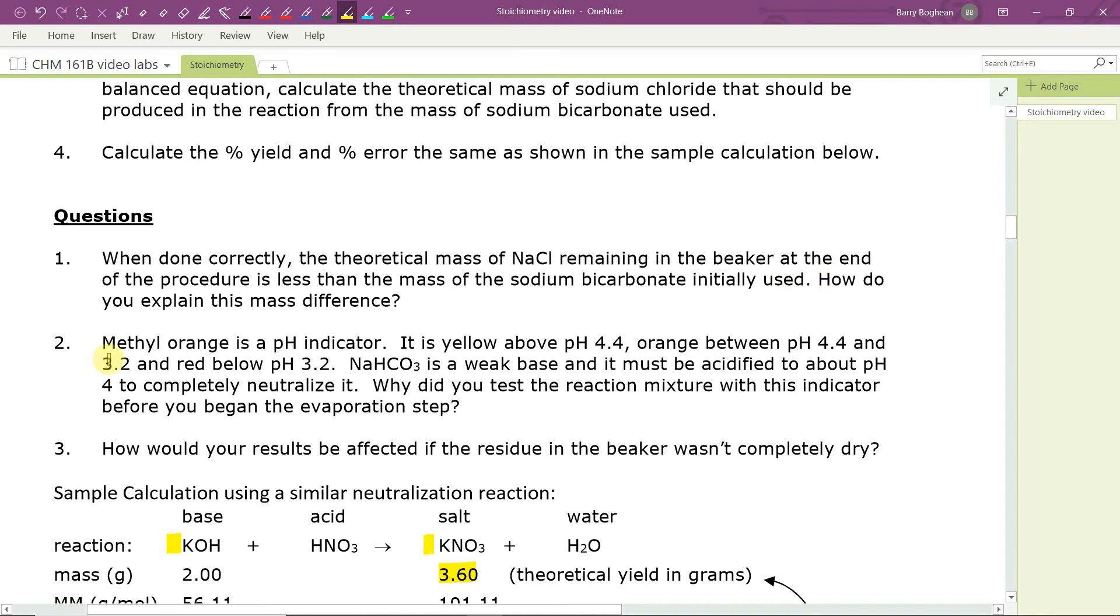Question number two. We already discussed the purpose of the indicator, but why do we add the indicator before we begin the evaporation step? Why don't we just add it at the end? Think of what would happen if we hadn't added enough HCl and we had some sodium bicarbonate left and then we heated it. Would it remain in the beaker? What would happen?